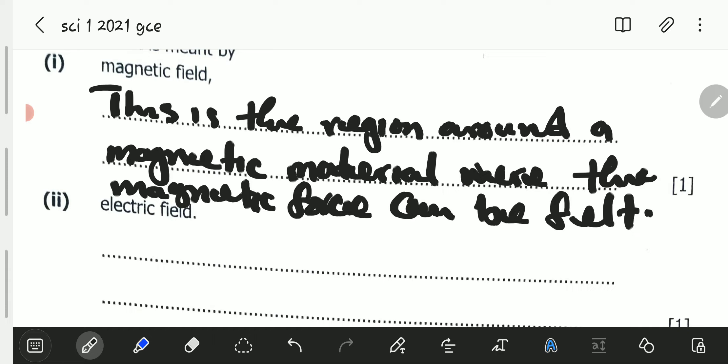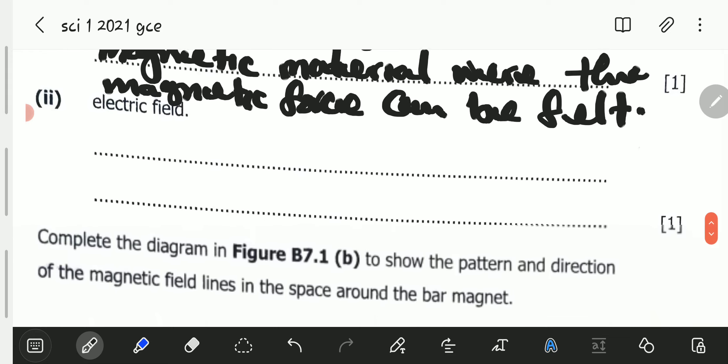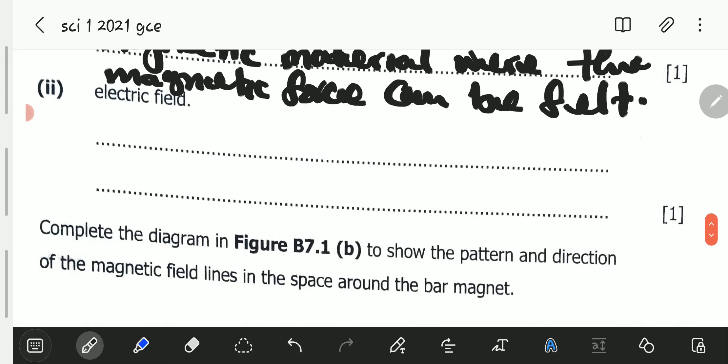Electric field. What is an electric field? An electric field is a region around a charged particle where the electric force can be felt by another charged particle or substance.